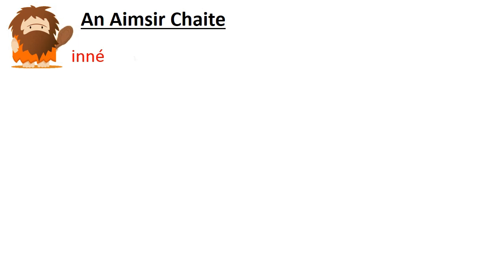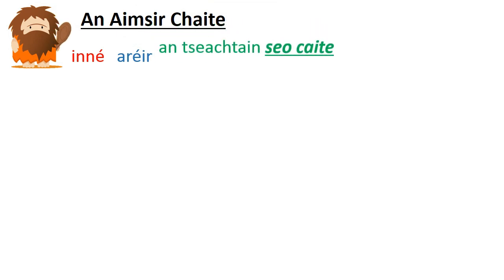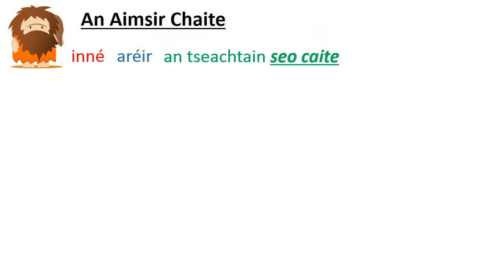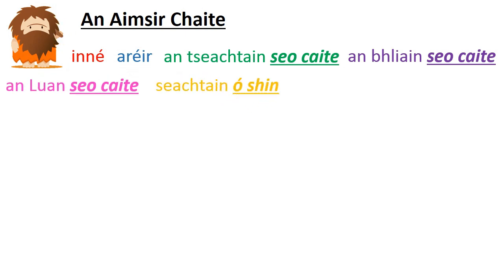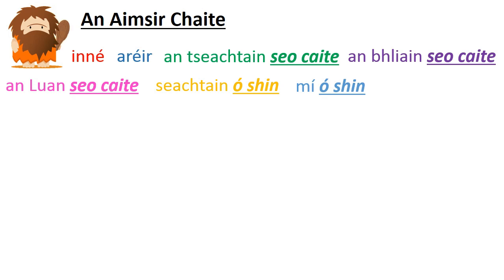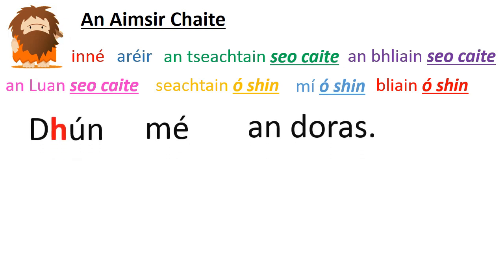Inné — yesterday. Arér — last night. An tseachtain seo caite — last week. An bhliain seo caite — last year. An Luan seo caite — last Monday. Seachtain ó shin — a week ago. Mí ó shin — a month ago. Bliain ó shin — a year ago. These are the time expressions we use with the past tense.